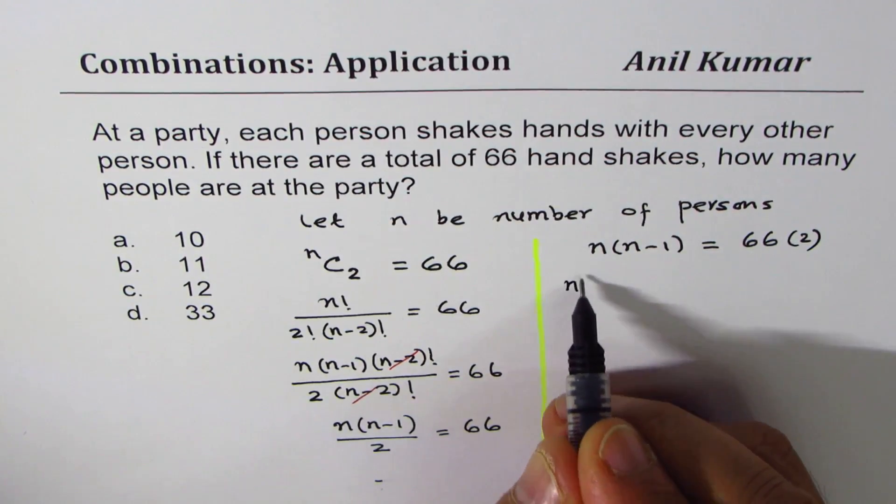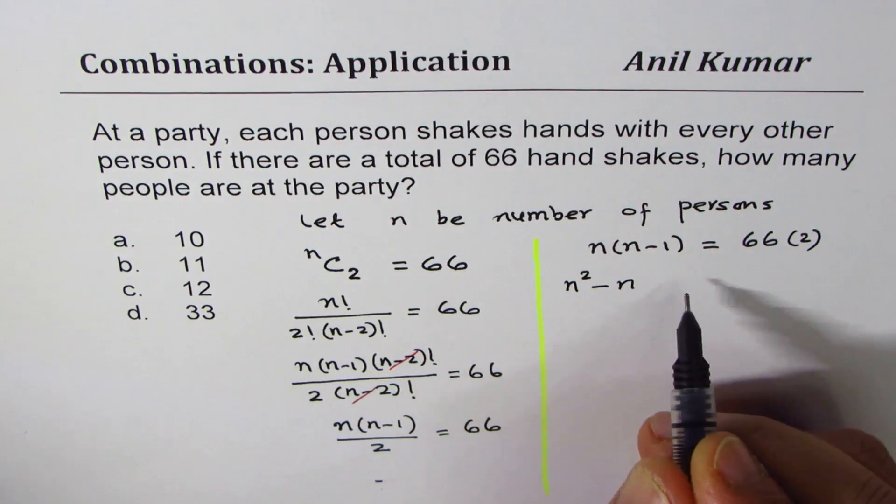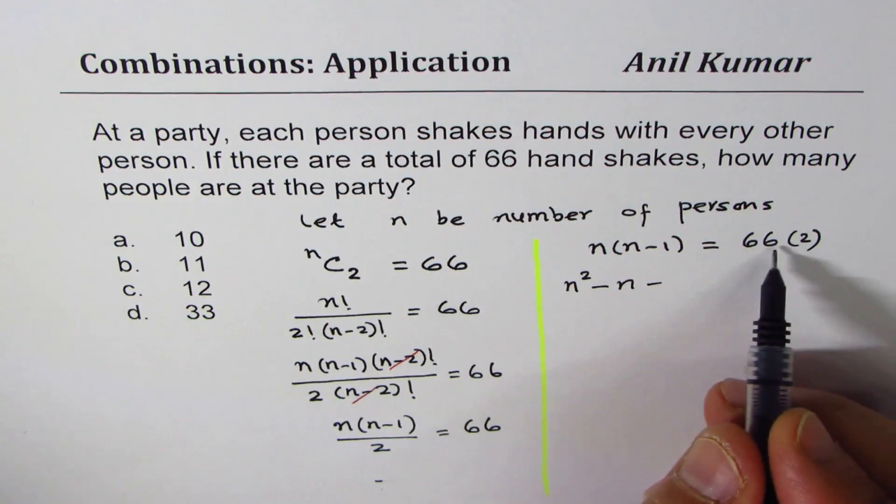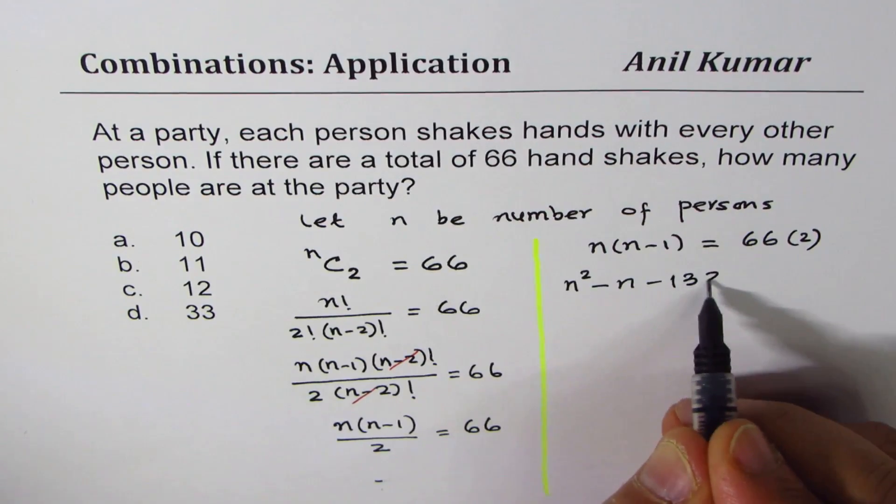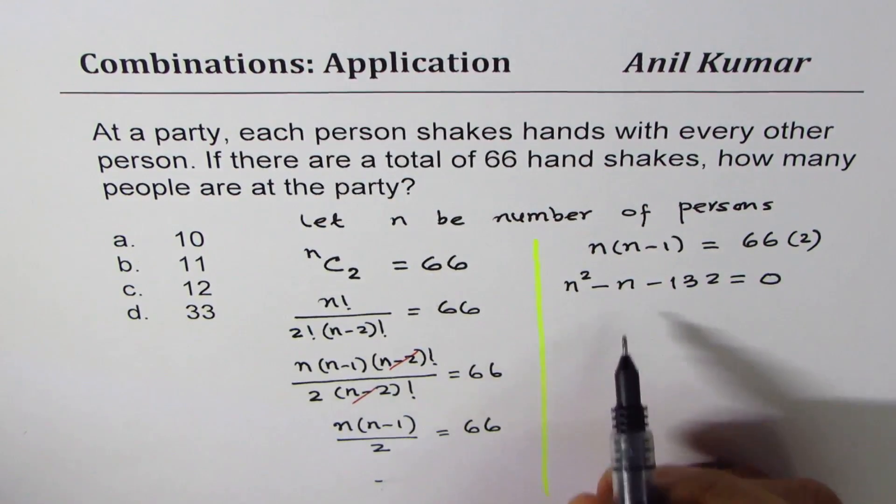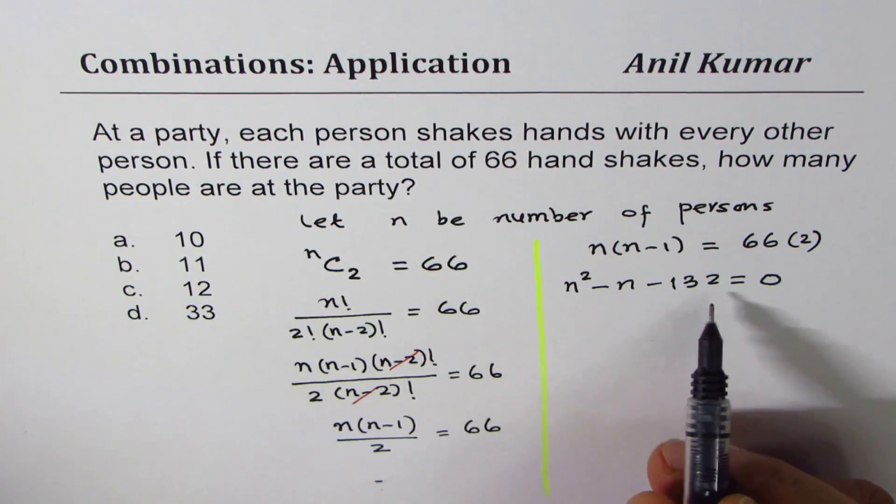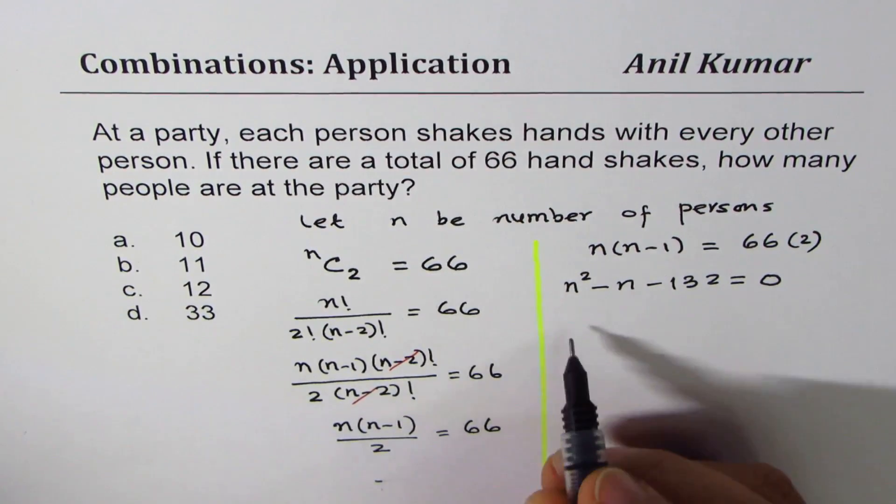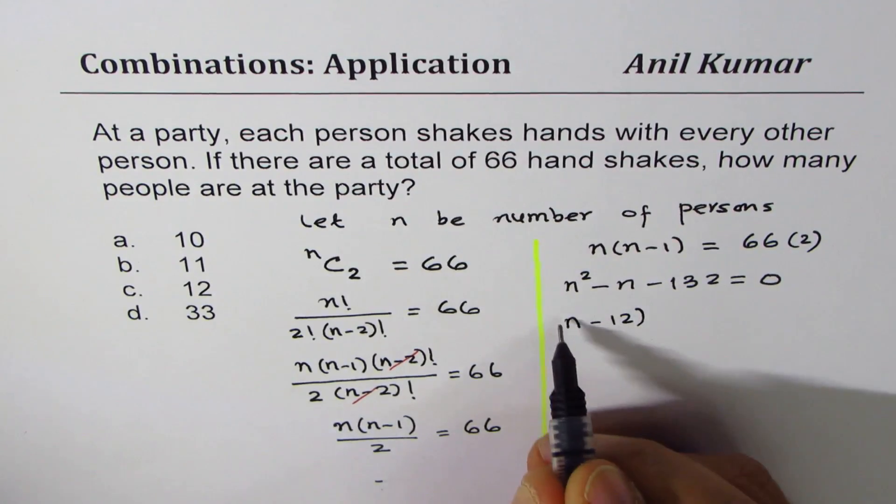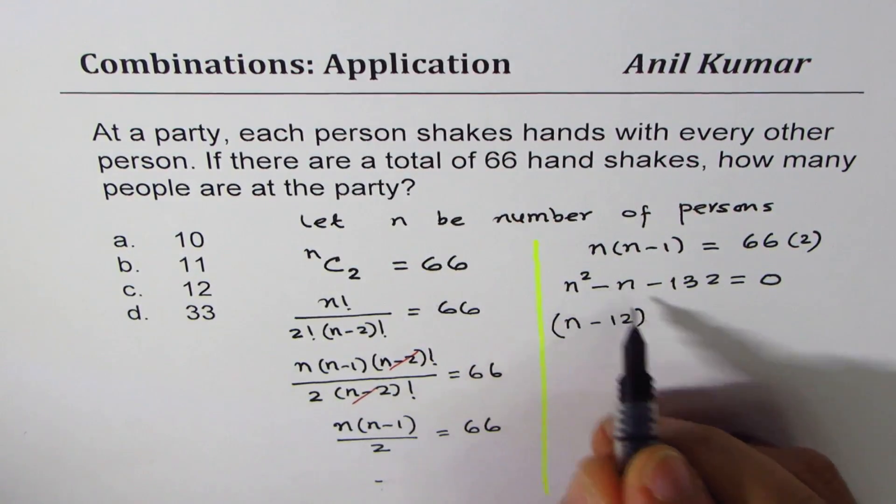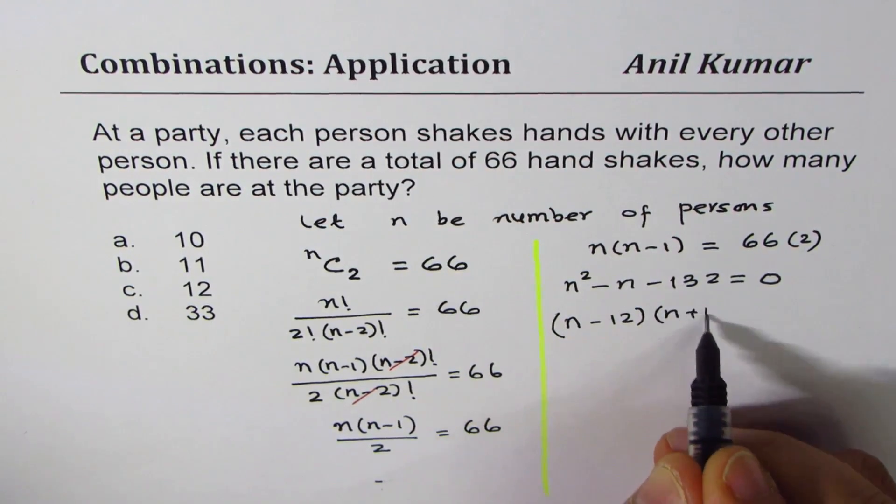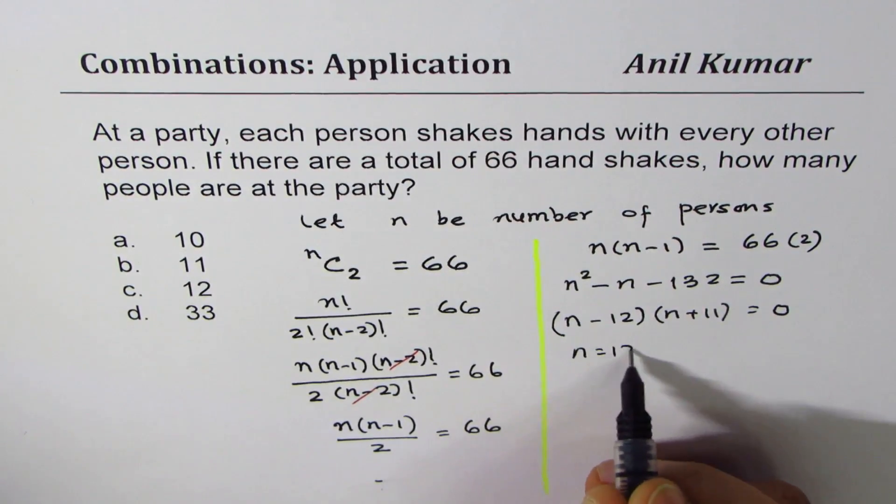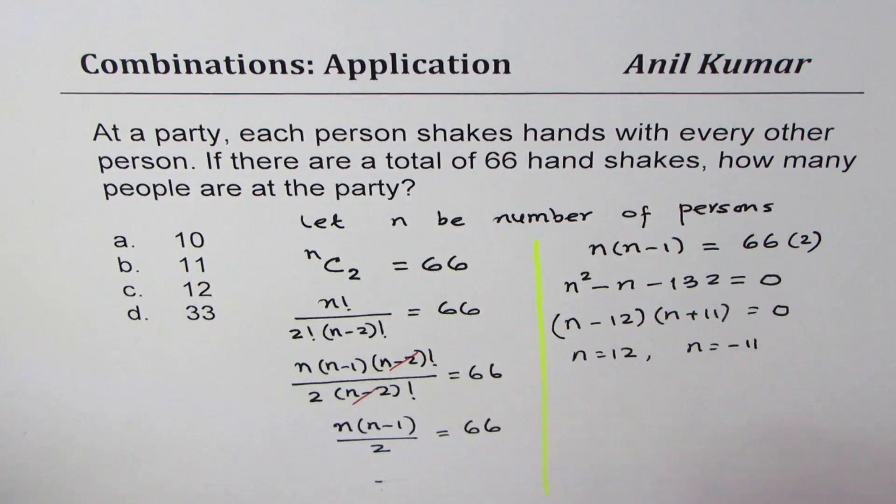Let us open the bracket. n squared minus n. Bring this term to the left side. 66 times 2 is 132 equals 0. You could use quadratic formula or factor this. 12 times 11 is 132. So we could factor this as n minus 12 times n plus 11 equals 0, that gives you n equals 12 or n equals minus 11.